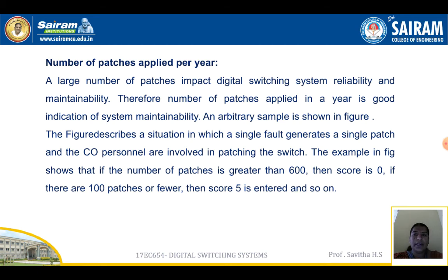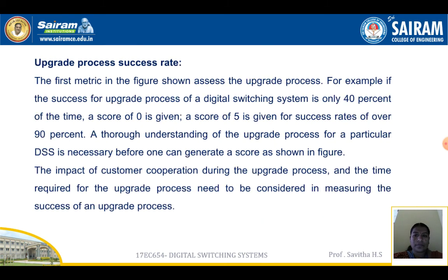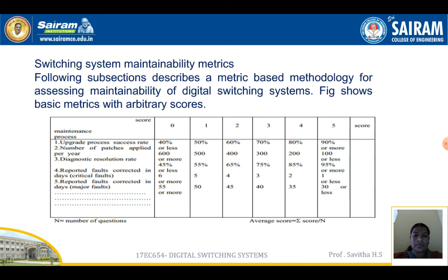The number of patches applied per year is another metric. A large number of patches negatively impacts DSS reliability and maintainability. In the example shown in the figure, a single fault generates a single patch and CO personnel are involved in patching the switch. If the number of patches is greater than 600, the score is zero; if there are 100 patches or fewer, the score is five.